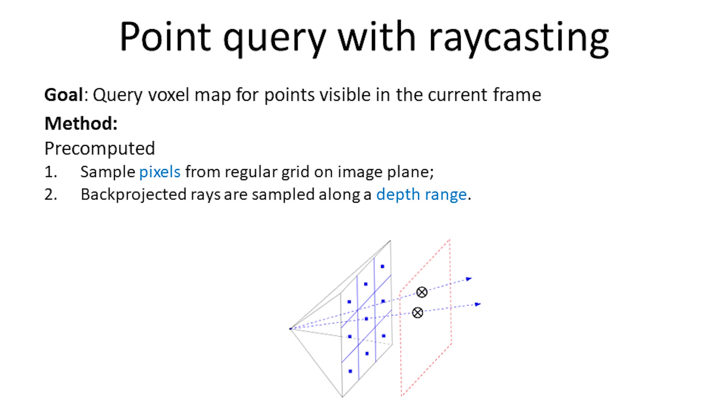A necessary function in the tracking in SLAM is to query the points that are visible in the current frame. A raycasting-based map query geometrically guarantees query points to be in the field of view of the camera.